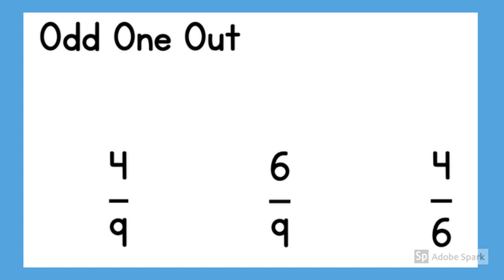Let's look at this question. Odd one out. Which fraction is the odd one out? Do you think it's six-ninths because the numerator is not a 4? Or do you think it's four-sixths because the denominator is not a 9? Well, we've been looking at equivalent fractions. So pause the video and see if you can work out the odd one out.